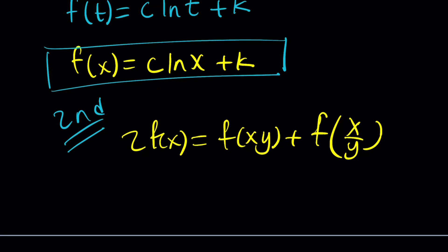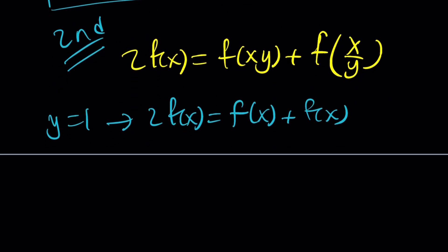But I can use any positive number. So let's try y = 1. If I replace y with 1 everywhere, I get 2f(x) = f(x·1), which is f(x), plus f(x/1), which is f(x). Uh-oh. It's kind of like stating the obvious, right? 2f(x) is always f(x) + f(x). This didn't give me much.